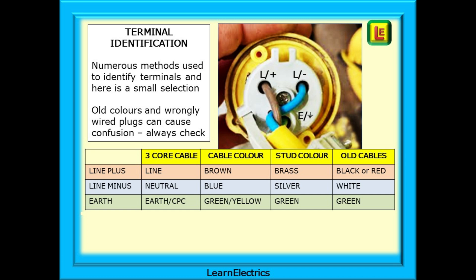And lastly the green and yellow into the marked earth terminal. Other marking conventions as shown in the table might include colour coded terminals where they are coloured brass, silver or green. And there can be many old wiring colours on older plugs and sockets.